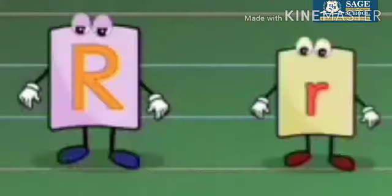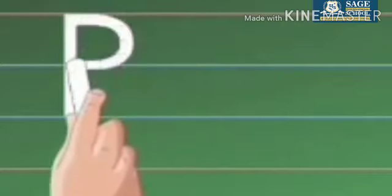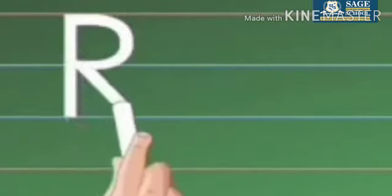Today we will practice capital and small R. Capital R — start from the top, draw a standing line down. Now go again to the top, draw a curve till the middle and draw a slanting line to the bottom.